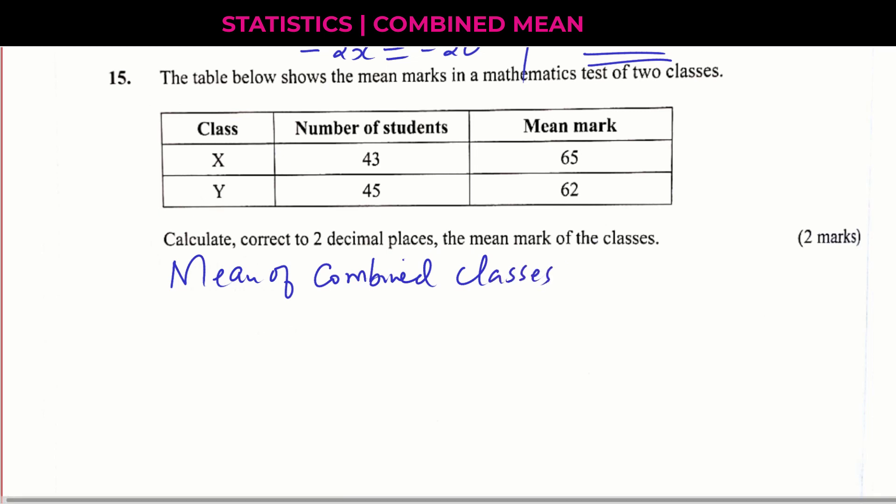How do we get the mean of combined series? In this case, these are the classes. Now we're going to let the number of students for class X to be represented by N1, then number of students for class Y to be represented by N2. So, mean mark for class X to be represented by X bar 1, then for class Y, X bar 2.